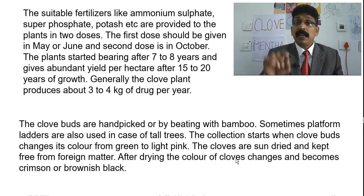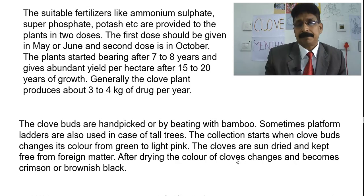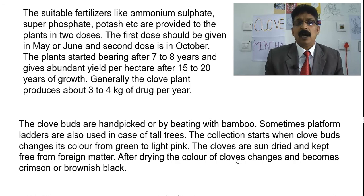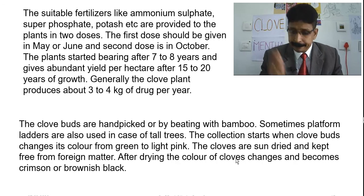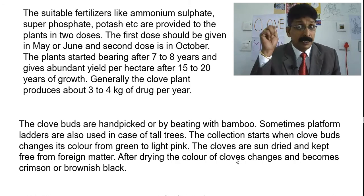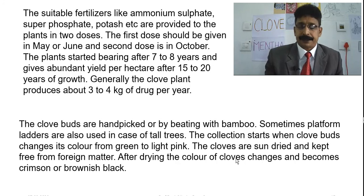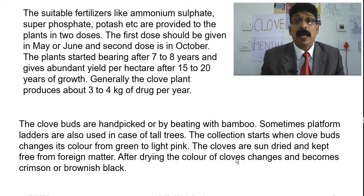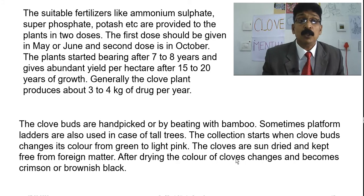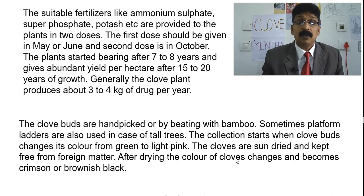Fertilizers like ammonium sulfate, superphosphate, and potassium are provided in two doses — first in May or June, and the second in October. The plant starts bearing after seven to eight years, giving abundant yield per acre after 15 to 20 years of growth. Generally, a clove plant produces about 3 to 4 kg of drug per year. Clove buds are hand-picked or beaten off with bamboo sticks; platform ladders are used for tall trees.